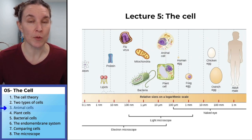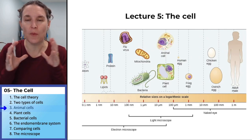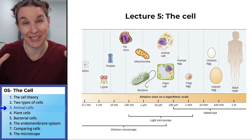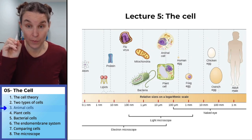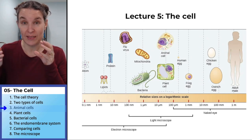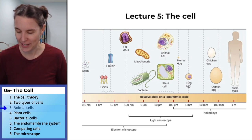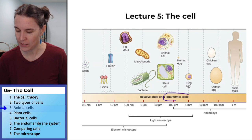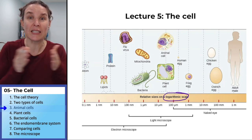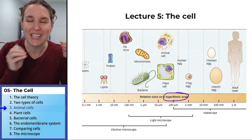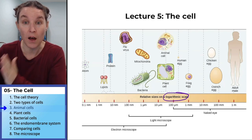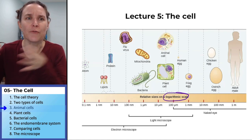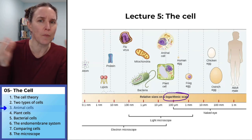Now we're going to start looking at an animal cell, but before we do, I wanted to show you this image that kind of helps you visualize scale. Super important to look at the scale of this image — it's actually a logarithmic scale. So if you look down here, it tells you that it isn't a linear scale, which means each point on this diagram is 10 times different in magnitude than the point next to it.